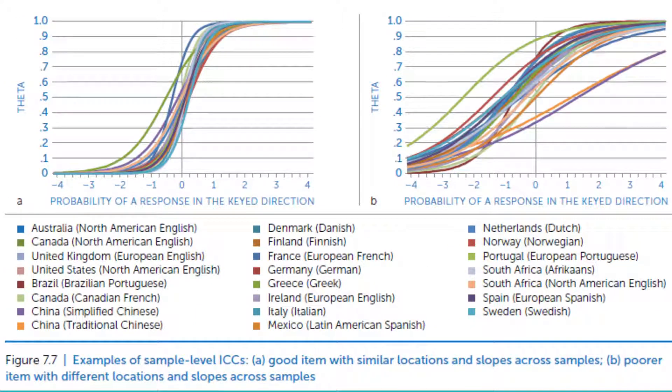The second thing we do is look at items, using something called item response theory. The item on the left shows that across all the different country samples, it functioned in a very similar way, whereas the item on the right did not function well across those samples. In that case, we simply didn't use item B but kept item A. What we're looking for is whether the item works across gender, ethnicity, and other dimensions — and whether it works as well in Mexico as it does in China or in a Norwegian translation.